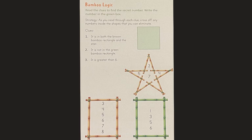Alright, the last section is called Bamboo Logic. Read the clues to find the secret number. Write the number in the green box. A strategy is, as you read through each clue, cross off any numbers inside the shapes that you can eliminate. So we have three shapes here. And each shape has numbers inside. And we are using these clues to figure out which number, there's only one, is the mystery number.